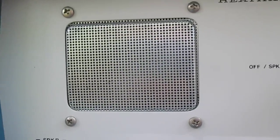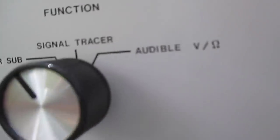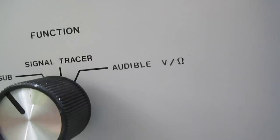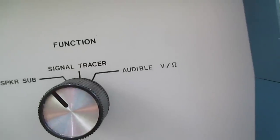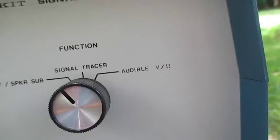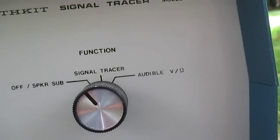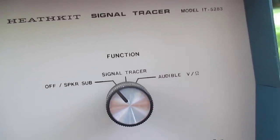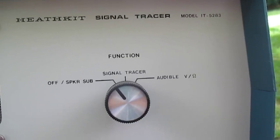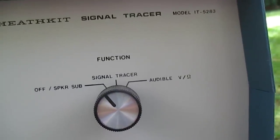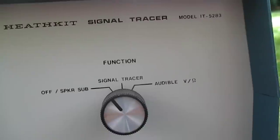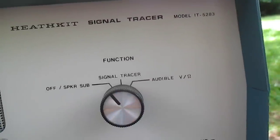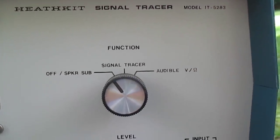That allows us to inject RF and AF signals into the signal tracer where they are amplified and heard over the loudspeaker inside. Then we have another position which is really not that useful: audible volts and ohms. I believe that position is used for checking resistance and the faster the tone you hear the higher the resistance or voltage, but that feature is really not that useful to us. You know we can use a standard digital multimeter and get a whole lot more accurate representation.